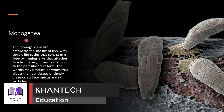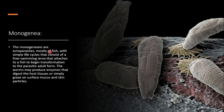The next is class Monogenea. Monogeneans are ectoparasites mainly of fishes, with a simple life cycle that consists of a free-swimming larva that attaches to the fish to begin transformation to the parasitic adult form.